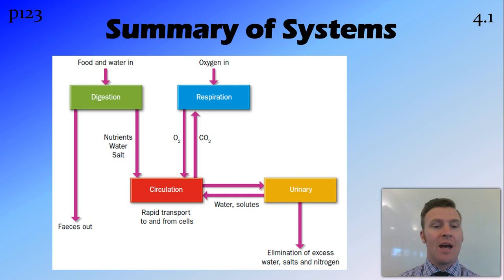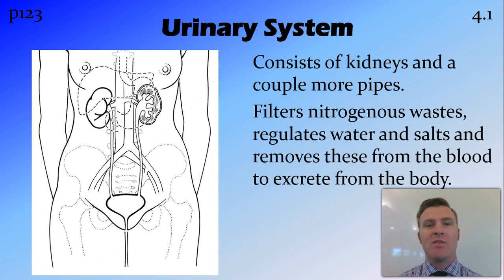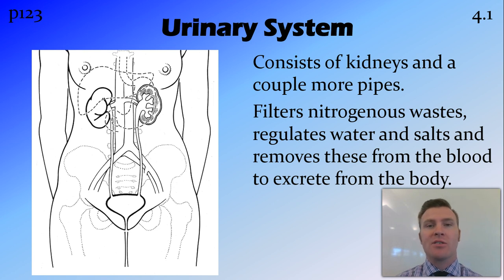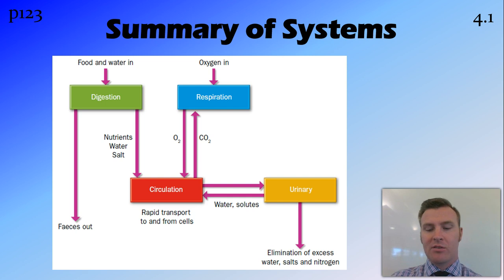The digestive system takes in food and water, breaking them down into nutrients, salts, and water. Faeces is removed as a waste product. Nitrogenous wastes are removed from the blood through the urinary system, which basically consists of the kidneys and a few pipes. It filters out nitrogenous wastes for excretion, and also regulates the amount of water and salts in the blood — excreting what's not needed and returning what is.